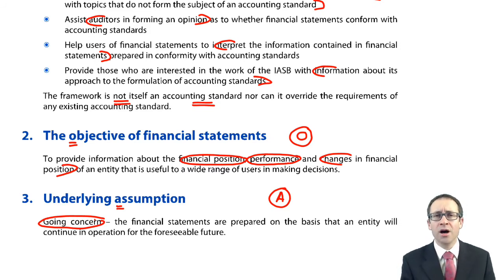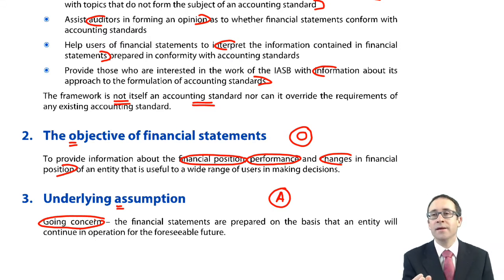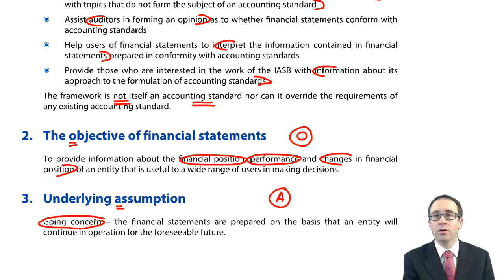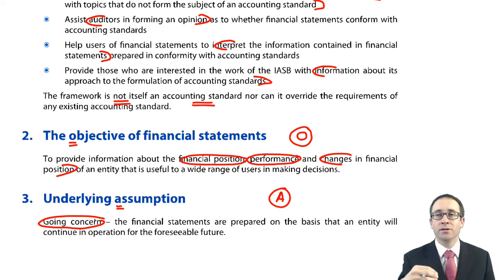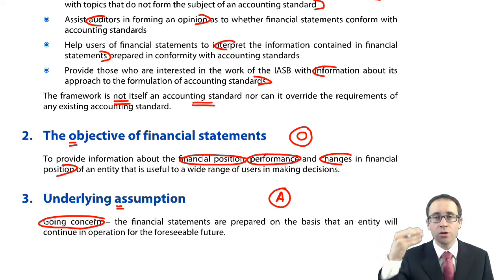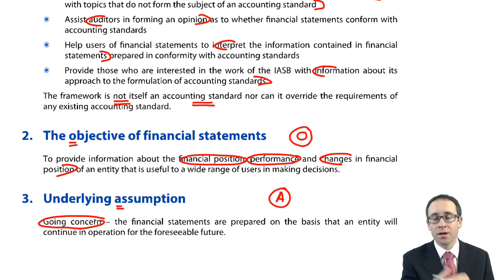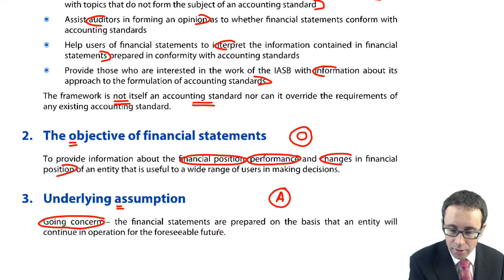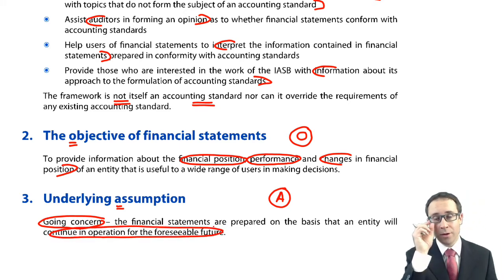Something we touched upon at the very start of your CIMA qualification, at the certificate level — we went through and looked at the statement of financial position and said we're going to prepare it based on the going concern basis. Therefore we show non-current and current assets, and non-current and current liabilities, on the basis that you are going to continue to operate for the foreseeable future.